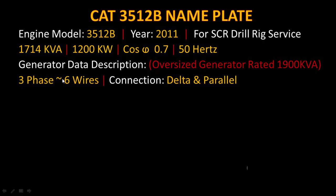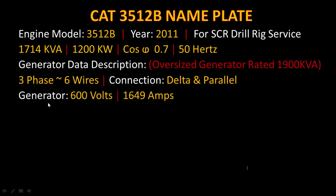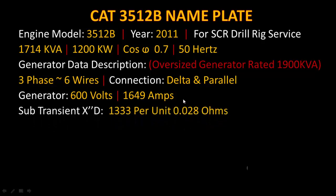Looking at the generator data description: the generator is oversized, rated at 1900 kVA. It is three-phase sinusoidal with a total of six wires. The winding connection is in delta and also in parallel. The output voltage is 600 volts AC, and the total current is 1649 amperes.